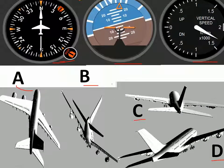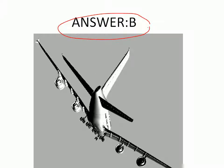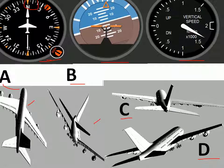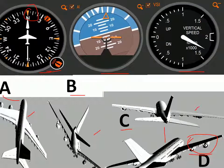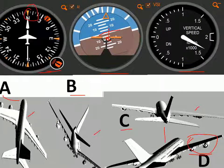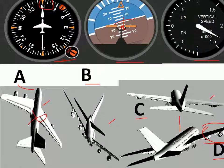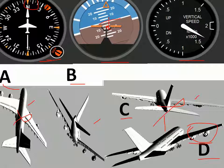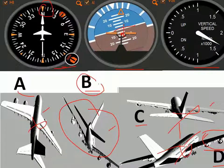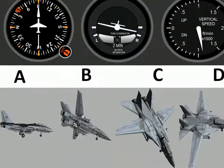The answer is option B. The compass is pointing towards north, so options pointing away from north are eliminated. The attitude indicator shows the plane is going downward because the orange dot is completely below the white line. Option A shows the plane going upward, option C shows the plane straight, and option D shows the plane almost going upward — so option B, which shows the plane going downward, is the correct answer.